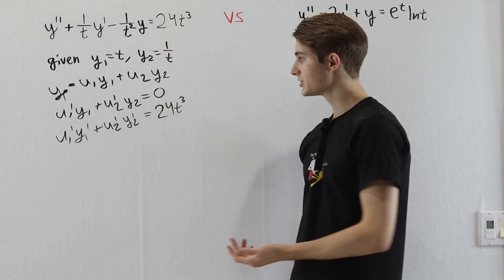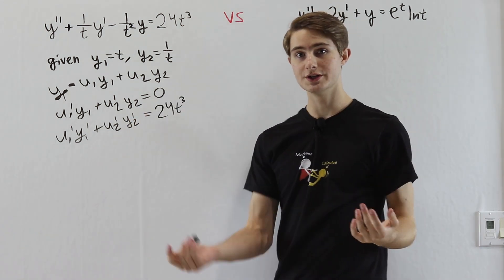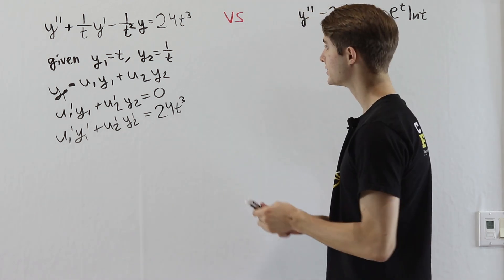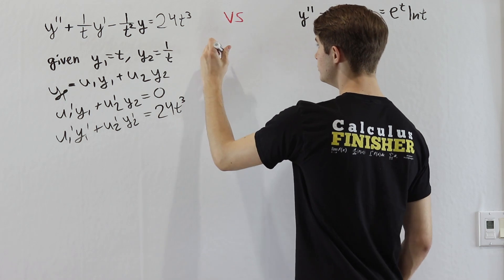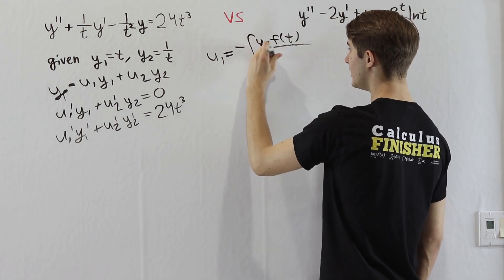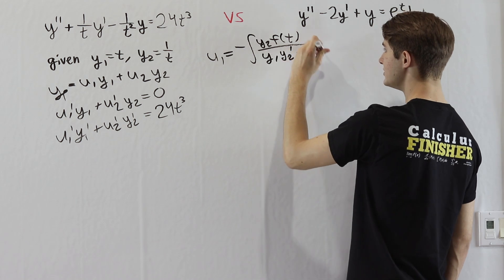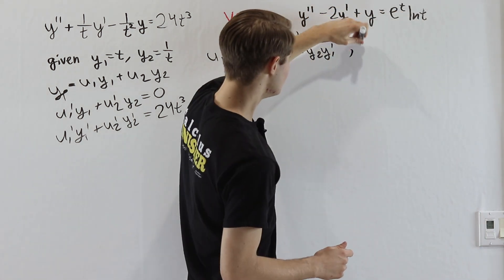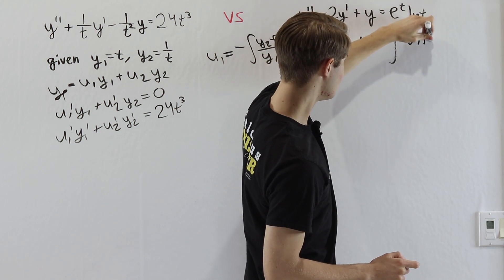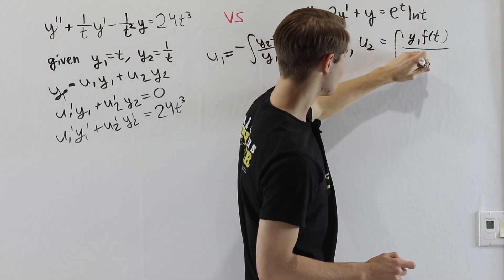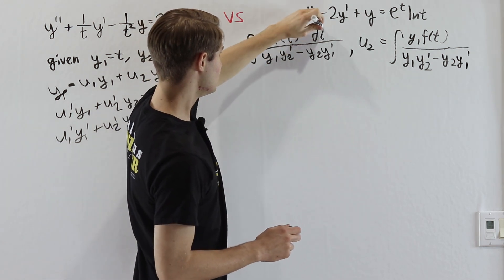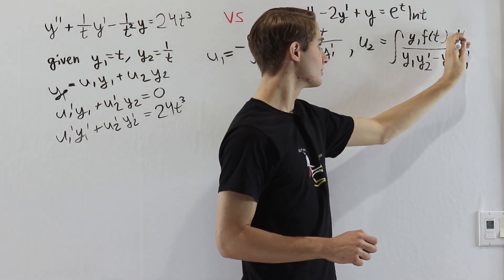From the full variation of parameters derivation, we get explicit integral formulas. u1 equals negative the integral of y2·f(t) over (y1·y2' − y2·y1'), and u2 equals positive the integral of y1·f(t) over the same denominator, y1·y2' − y2·y1'. Once we evaluate these two integrals, we can find our particular solution.